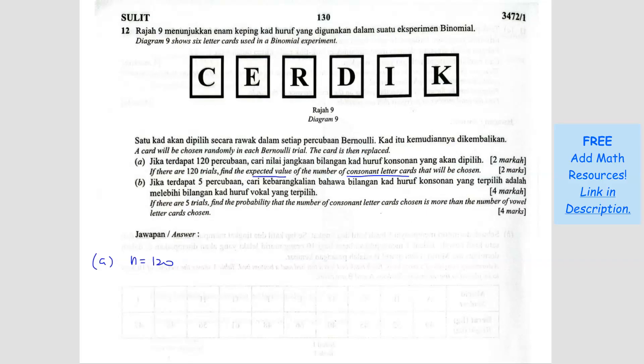So if we are doing binomial, we need N, P, and Q, right? But now we are looking for finding the expected value, the mean. So the formula is N times P. So we need to find P. This one is a consonant letter, we're talking about consonants.